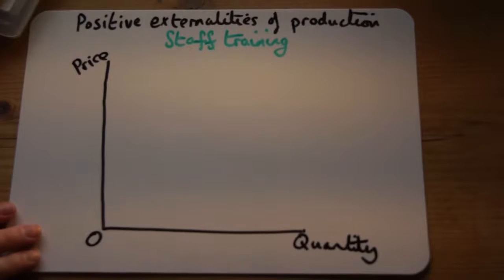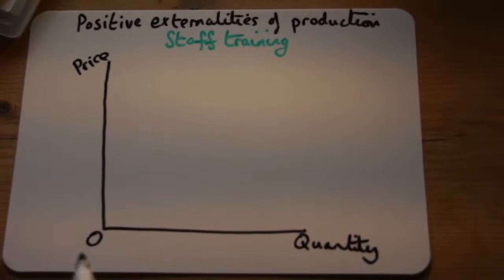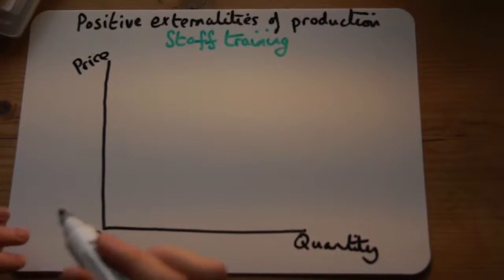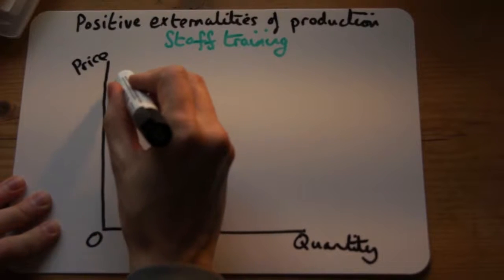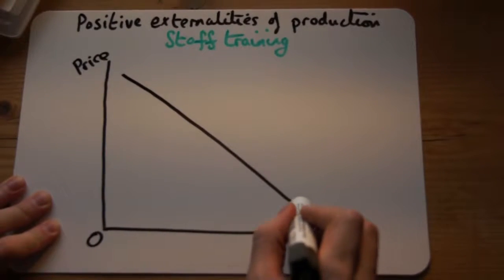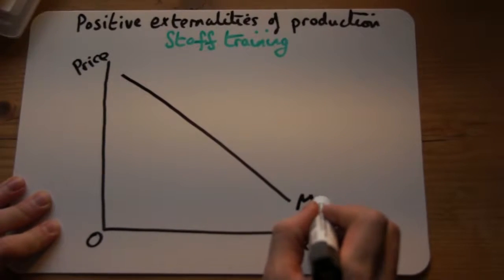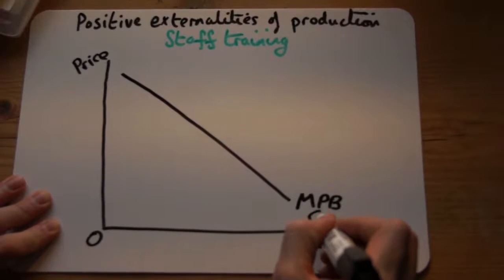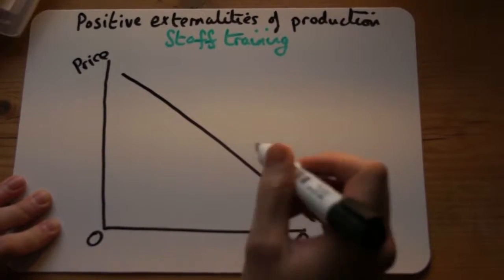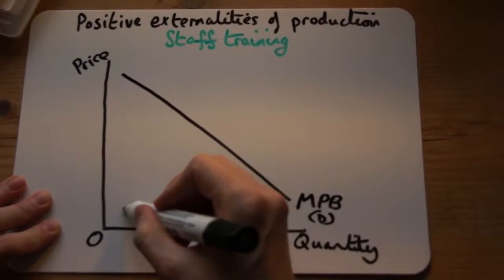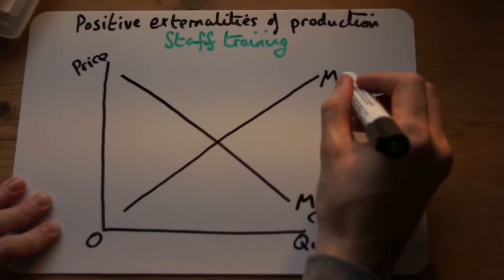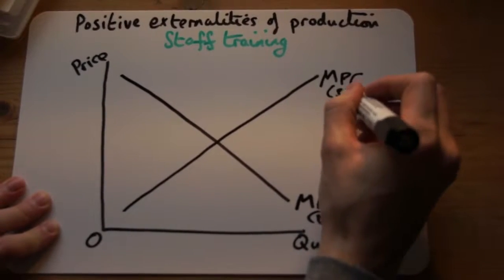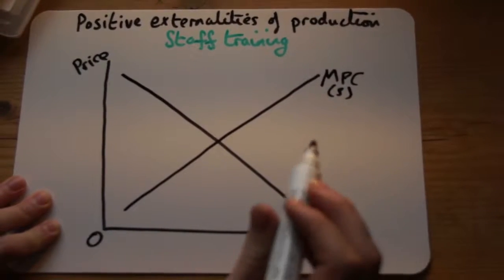This is a how-to guide on drawing positive externalities of production. The example we're using here is staff training. The first thing we need to do is find the marginal private benefits — the same as the demand for staff training — and we need to find the marginal private cost, or supply line, of staff training.